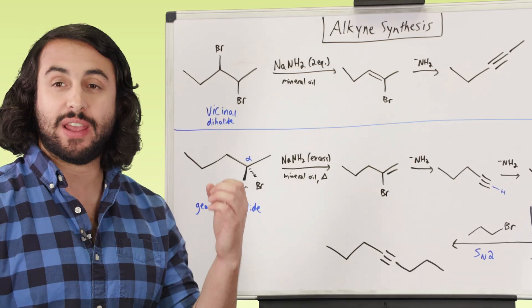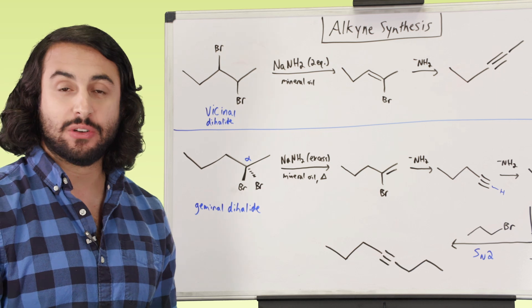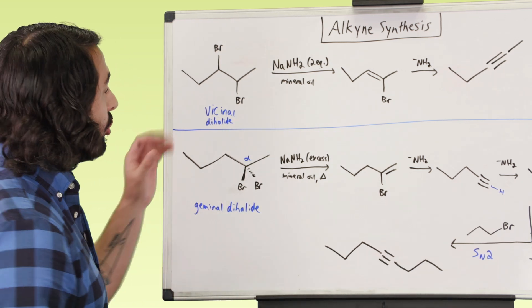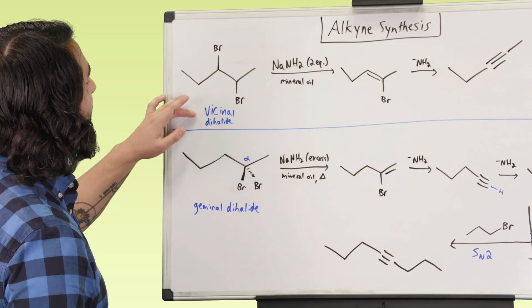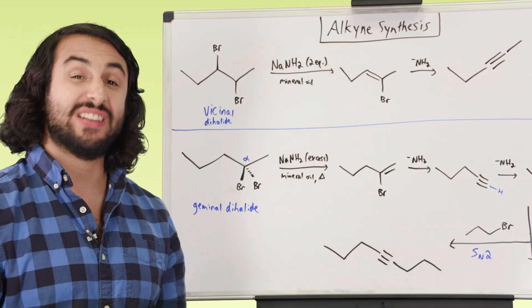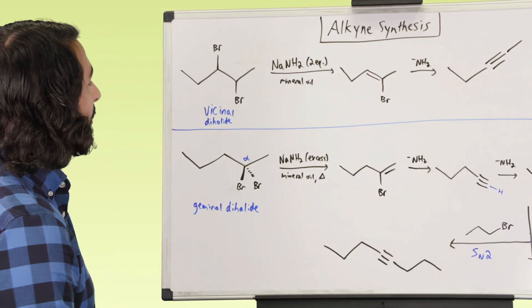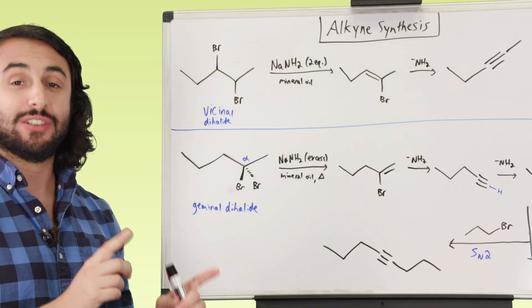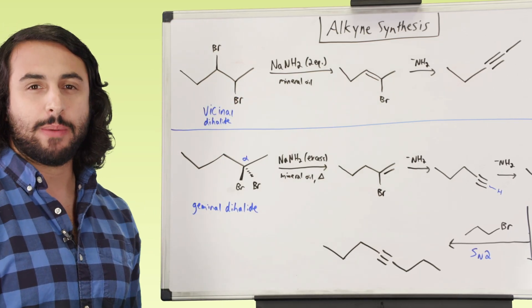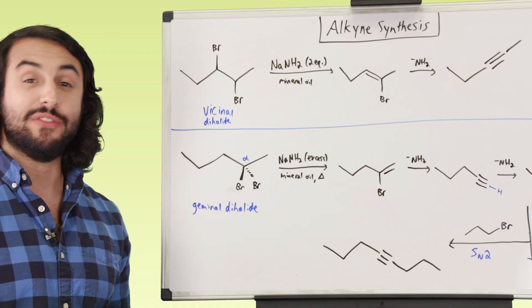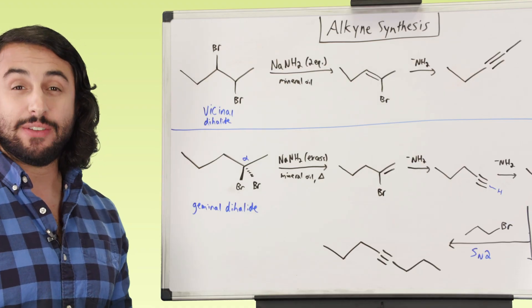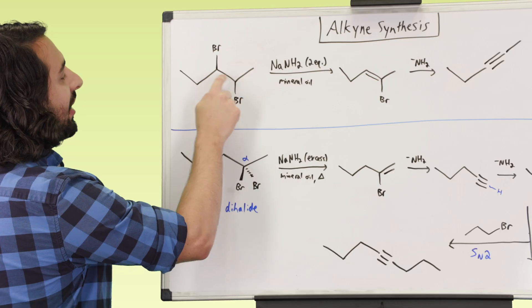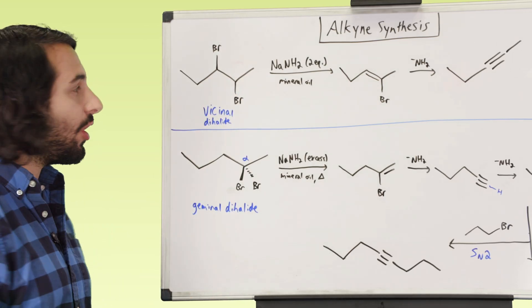So we know that if we have a halogen — if we have a bromine or something on an alkane — we can do an E2. But if we have two, we can do this twice. So let's look first at a situation where we have a vicinal dihalide. A vicinal dihalide means that we have two halogens and they are on adjacent carbons. An easy way to remember that is vicinal kind of sounds like vicinity — they're in the vicinity of one another, they're adjacent.